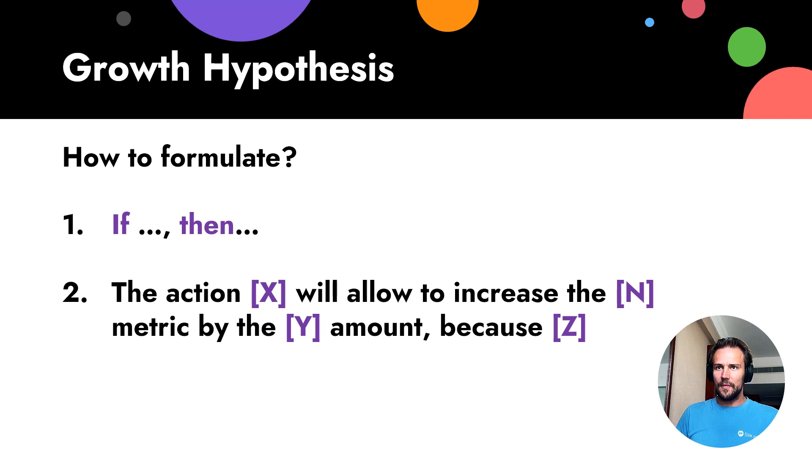If we talk a little bit more deeply about that, the action X will allow to increase the metric N by Y amount because of that. The same example from my previous video. If we decrease registration fields by half, for example we have now six fields and we make them three, it will allow us to increase registration rate by twice because people do not like to fill unnecessary fields.